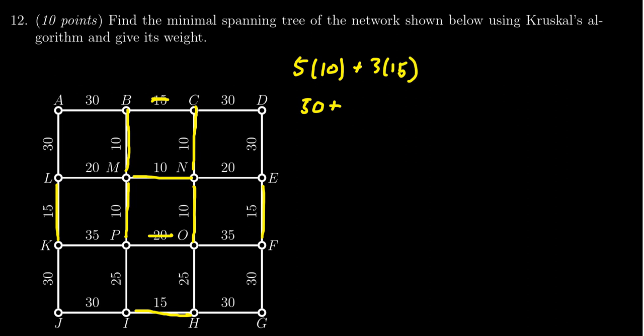Now looking at edges worth 20, you have LM that's worth 20 and NE that's worth 20. Be aware that I can't use KP anymore because that would form a cycle, and can't use OF either for the same reason. Those are 35 anyway, the most expensive ones. So we're going to add two 20s, which gives us 40.